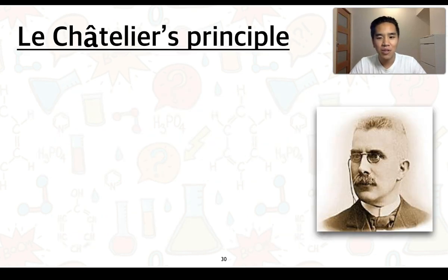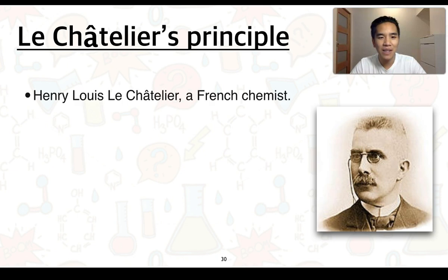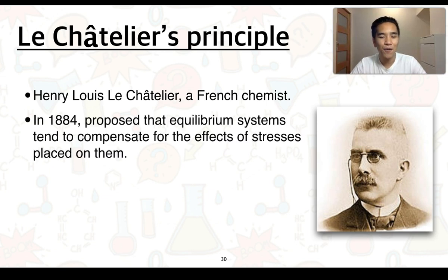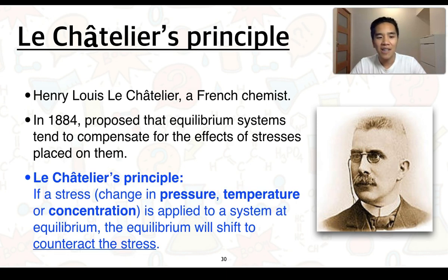So what is Le Chatelier's principle? This principle is named after Henri-Louis Le Chatelier, who was a French chemist. Back in 1884, he proposed that equilibrium systems tend to compensate for the effects of stresses that are placed on them. We can define Le Chatelier's principle as this: if a stress — which could be a change in pressure, temperature, or concentration — is applied to a system at equilibrium, the equilibrium will shift to counteract this stress.